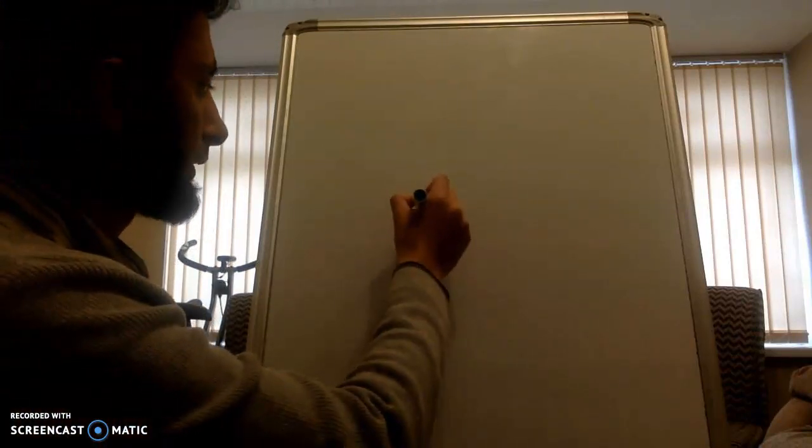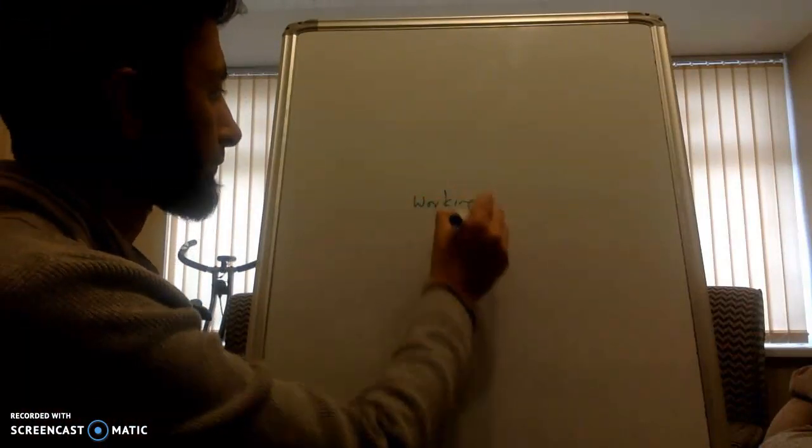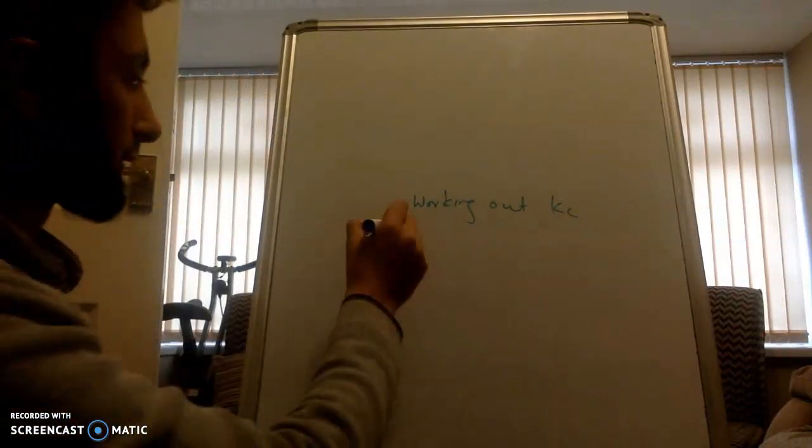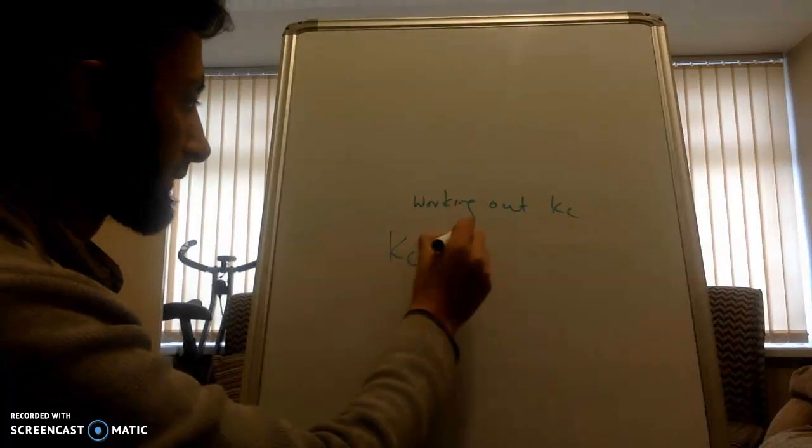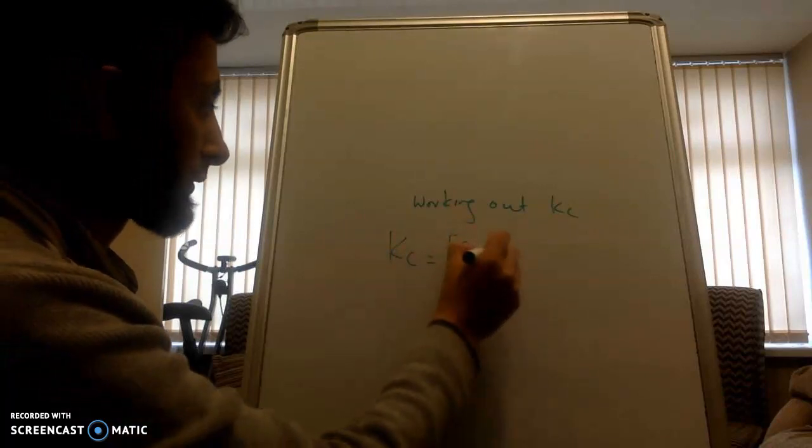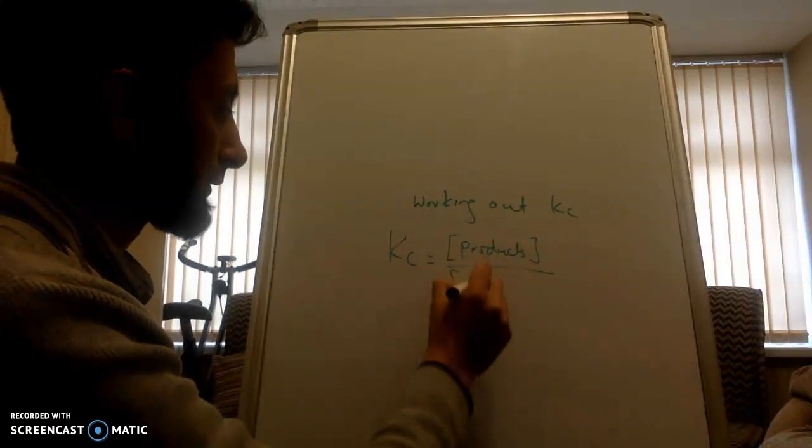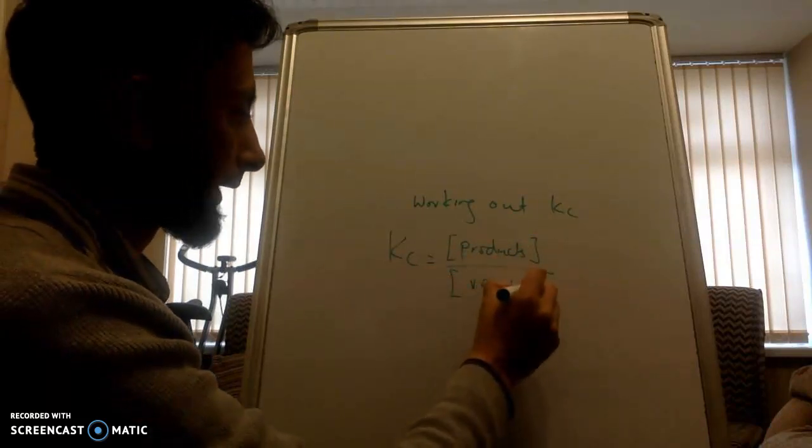Right, I'm trying a new software now, I'm just going to see if this is going to work fine. Right, working out Kc. Okay, so Kc is the concentration of product divided by the concentration of reactant.